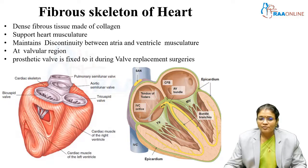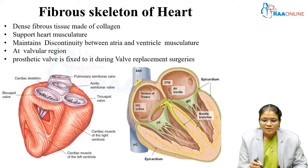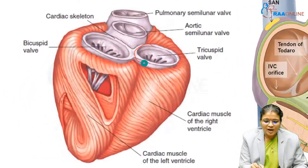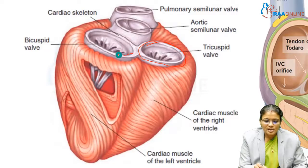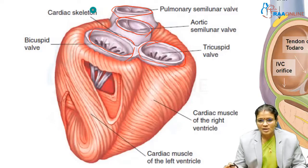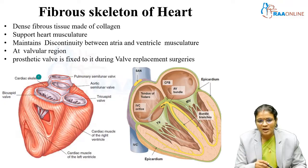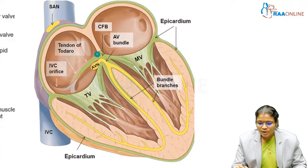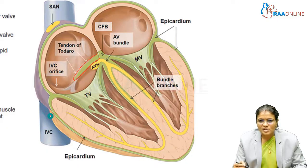One clinical use is that prosthetic valves can be fixed to the fibrous skeleton during valve replacement surgeries. This picture shows the fibrous skeleton of the heart: the tricuspid valve fibrous skeleton, the bicuspid valve fibrous skeleton, the aortic semilunar valve skeleton, and the pulmonary valve skeleton — all present at the valvular region. On the right side, close to the valvular region, there is the tendon of Todaro, and along the epicardium there is fibrous connective tissue.